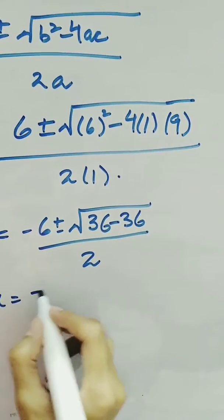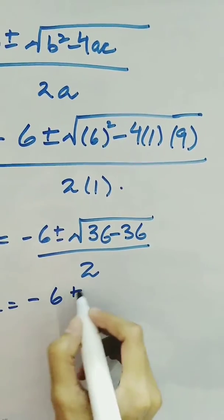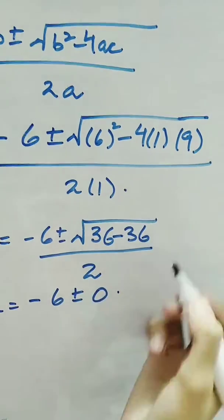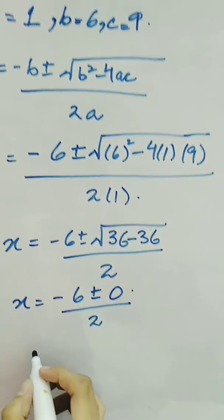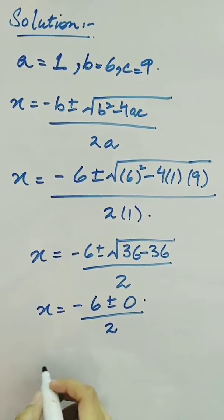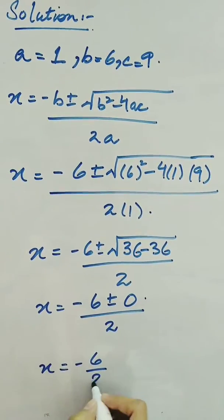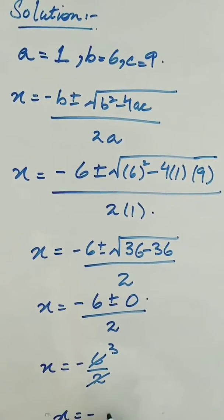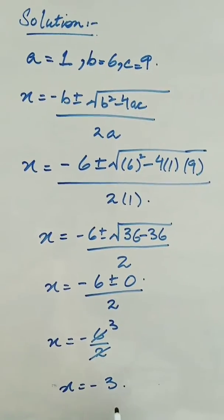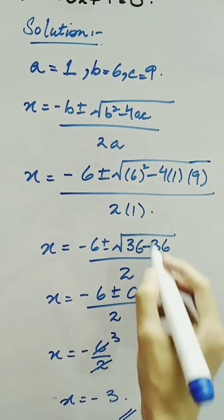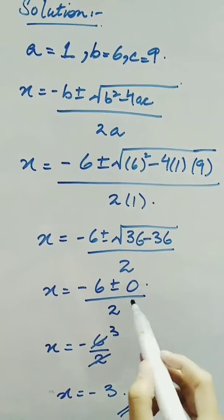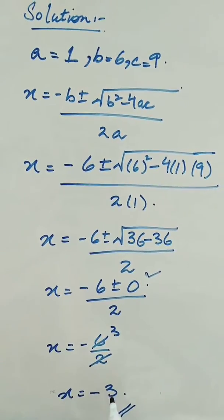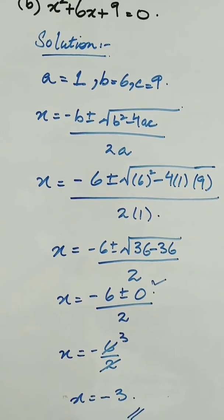We have x equals minus 6 plus minus root 0, since 36 minus 36 is 0 and root 0 is 0, divided by 2. So our answer becomes x equals minus 6 over 2, or x equals minus 3. We can say that minus 3 is a repeated root because the discriminant b squared minus 4ac becomes 0. This is a repeated root and this is the answer to our question.